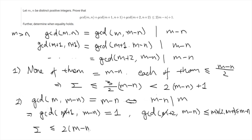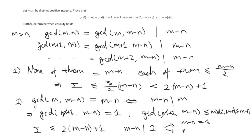So if we sum up these inequalities we immediately derive the desired inequality. And in particular, equality holds if and only if the second inequality holds, which means that m minus n divides 2. This gives two cases: one is m minus n equals 1, and we can easily check that this case always works; and the second case is m minus n equals 2, in which case we need 2 to divide m.